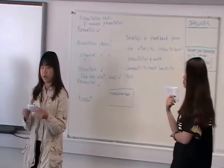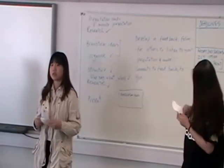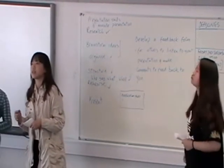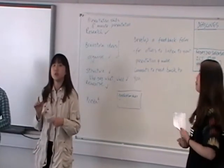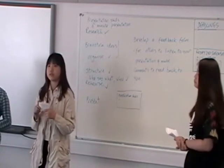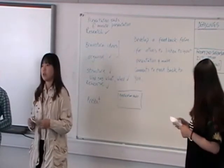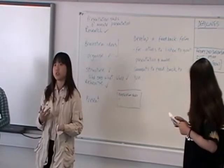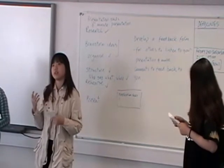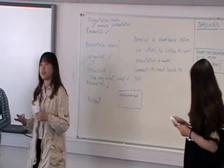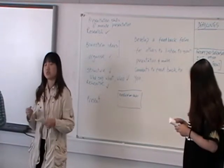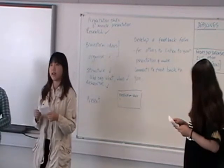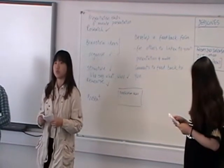Number four is control. When you work together as a group, you should make sure the information and the time are equally distributed — not too long, not too short. Make sure everyone has an equal role.